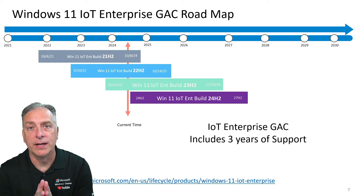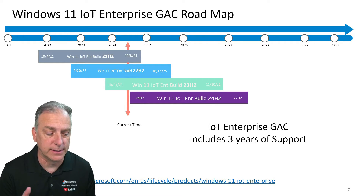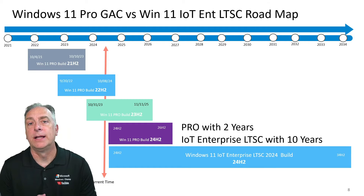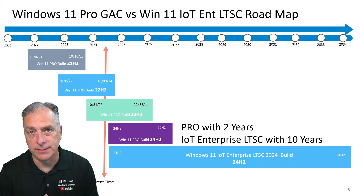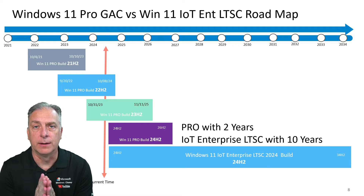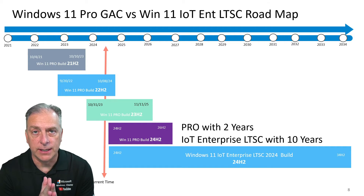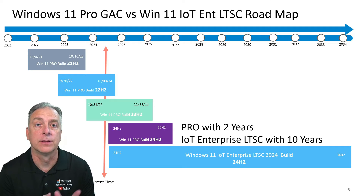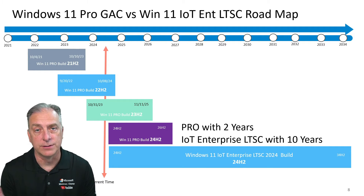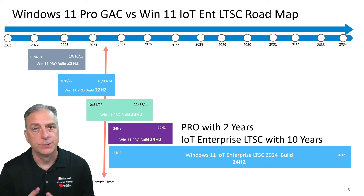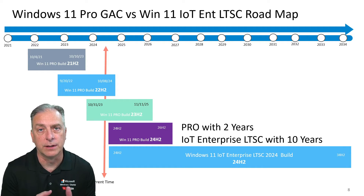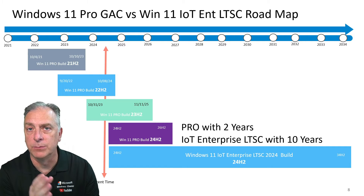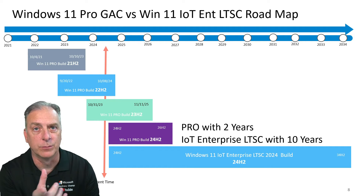To summarize: Enterprise GAC gets three years of support, LTSC gets ten years. Comparing to Windows 11 Professional, which is also GAC, the Pro version only gets 24 months — two years — of support, versus three years for Enterprise and ten years for the LTSC edition. So if you're on Pro, you should not be on Pro; you should be on the ten-year support of Windows 11 LTSC. Don't worry about constantly moving between builds with only 24 months of support.